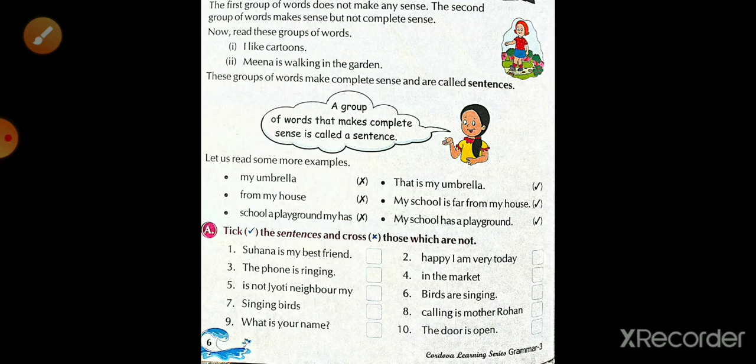Second one is, happy I am very today. आपको इसमें कोई भी sense क्या कहना चाहता है, वो particularly पता नहीं चलता है. तो हम cross out कर देंगे. Third one is, the phone is ringing. Fourth one is, in the market. Fifth is, birds are singing. Seven, singing birds.